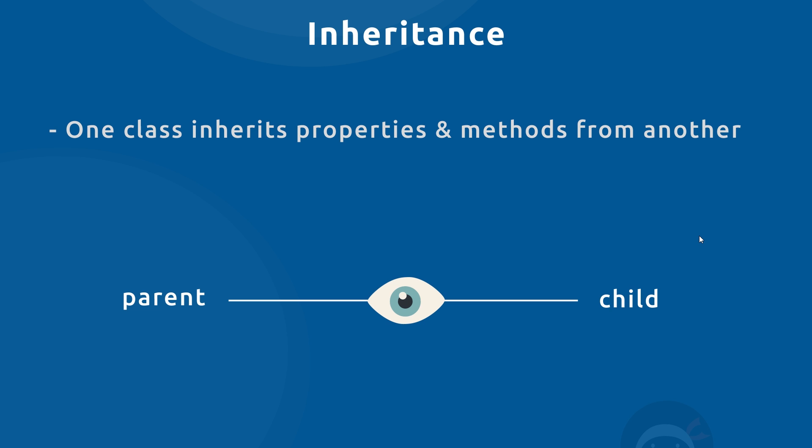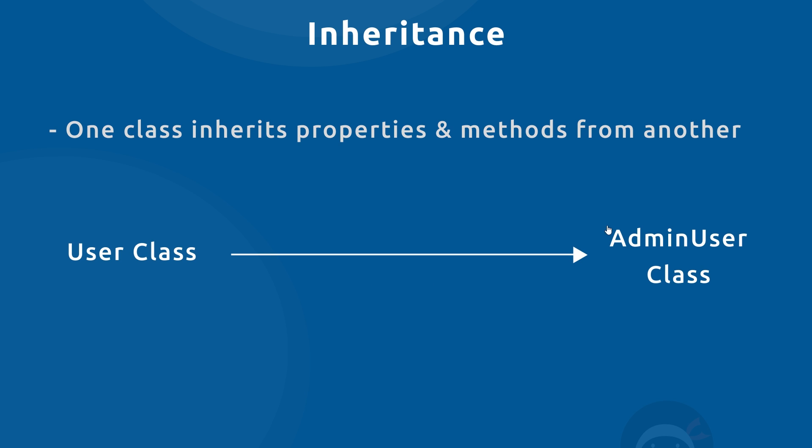An example: take our user class and create an admin user which inherits from it. The admin user should have all the same properties as a regular user — username and email — and the same method add friend, but also an additional method to remove other users or a property to define the admin level. We could create a brand new class from scratch, but this leads to code duplication and makes things harder to maintain.